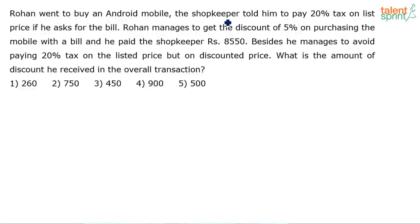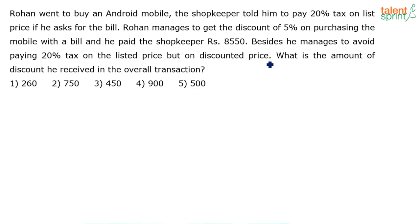Rohan went to buy an Android mobile. The shopkeeper told him to pay 20% tax on the list price if he asked for the bill. Rohan manages to get a discount of 5% on purchasing the mobile with a bill and he paid the shopkeeper ₹8,550. Besides, he manages to avoid paying 20% tax on the listed price but on the discounted price. What is the amount of discount he received in the overall transaction?